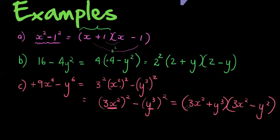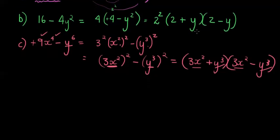To test yourself, multiply it out: 3 times 3 gives 9, x squared times x squared gives x to the power of 4, and the middle terms cancel. It must always be one positive and one negative sign — if both signs are the same, it can't factorize into two brackets. Then y cubed times y cubed gives y to the power of 6 — three y's times another three y's is six y's. That is indeed correct.